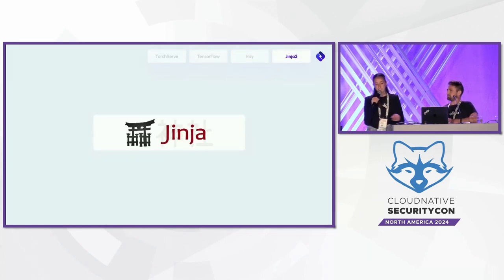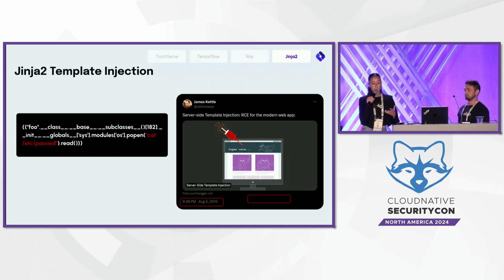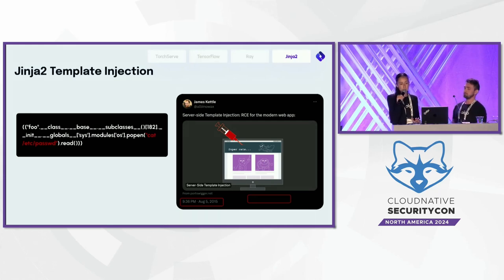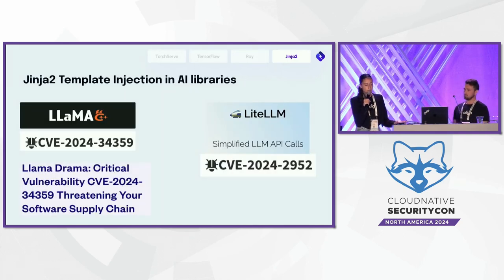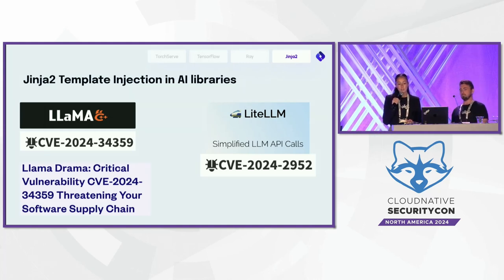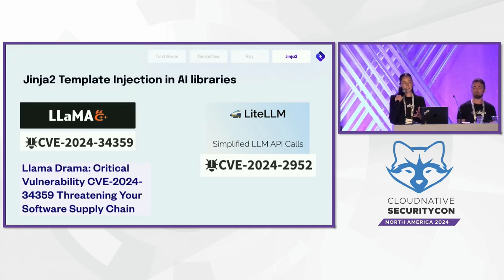Let's talk quickly about Jinja 2. It's a Python library for template rendering and it's very well known to be vulnerable by design to something called template injection, which can lead to remote code execution. Here is a classic payload. The first publication we found of this issue was back in 2015 — almost a decade ago. What's the connection to AI? Jinja is not an AI library, but in the last few months two very critical vulnerabilities were found in two popular AI libraries — Llama.cpp and LiteLLM, with one also called 'Llama Drama.' All of those dramas could have been prevented because they are a direct result of this template injection in Jinja 2, which has existed for more than a decade.